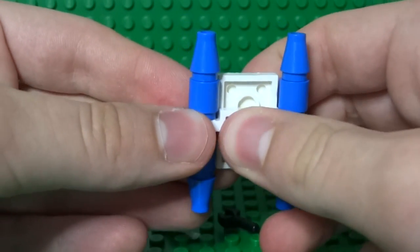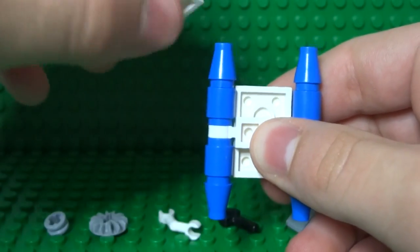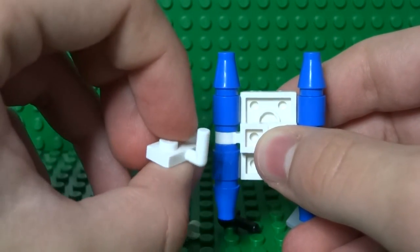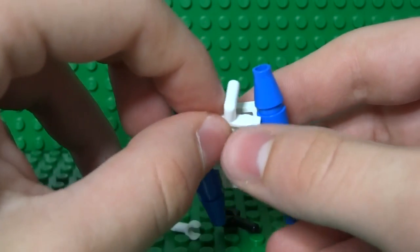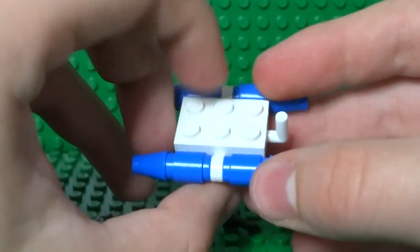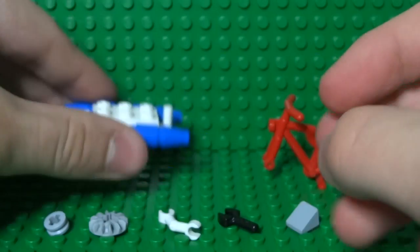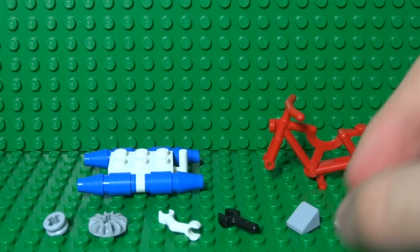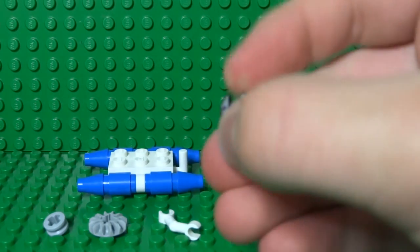And next to that you can take your one by two plates with the little bar on the end. This is going to be where you attach your propeller and we'll build that next.